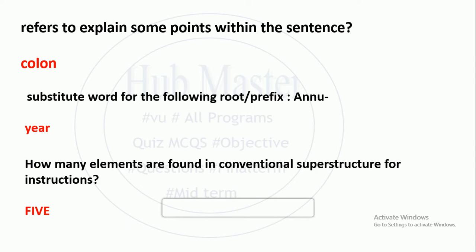How many elements are found in the conventional superstructure for instructions? For instructions, there are 5 elements.